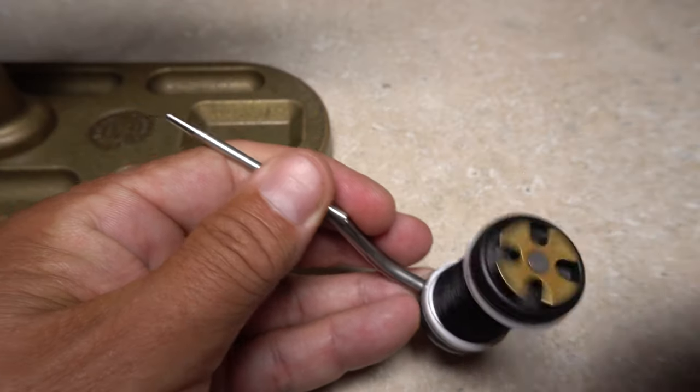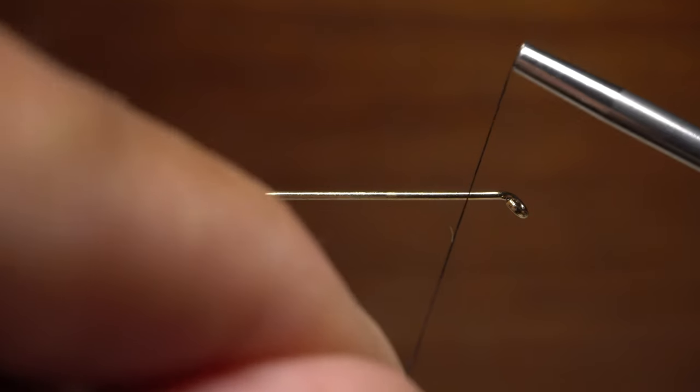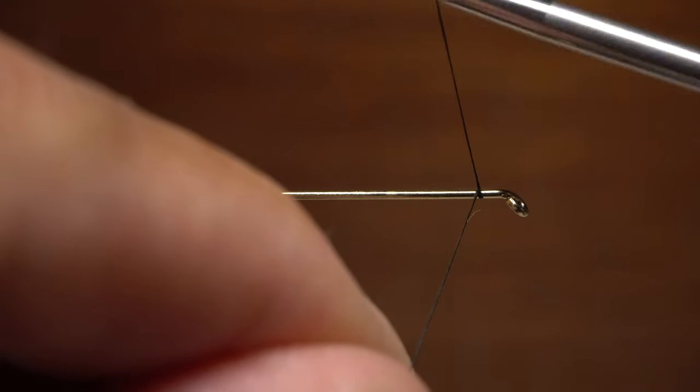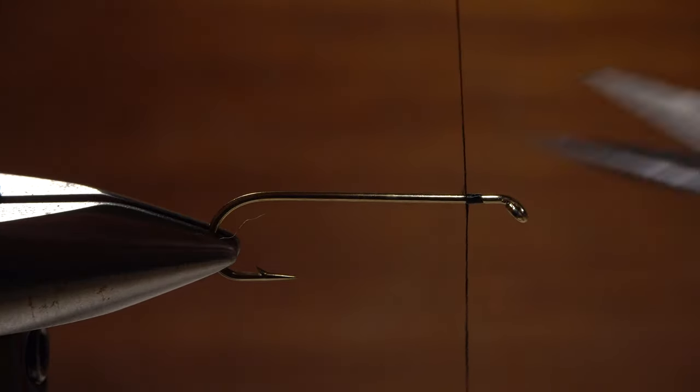For thread, I've loaded a bobbin with a spool of black UTC 70 denier. Get the thread started on the hook shank, leaving an eye length space behind the eye, and take a few wraps rearward before snipping or breaking off the tag.